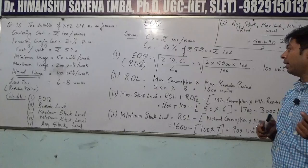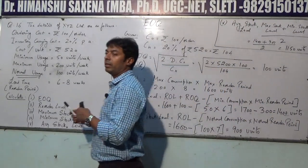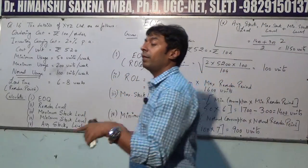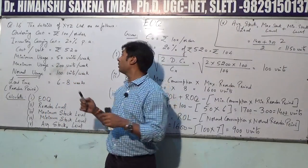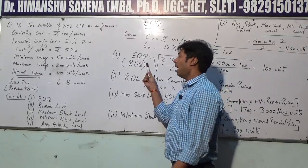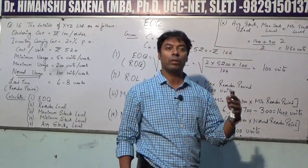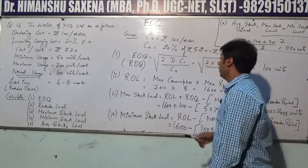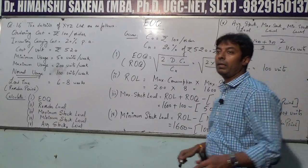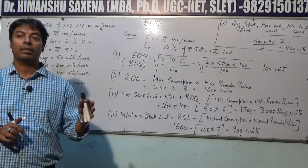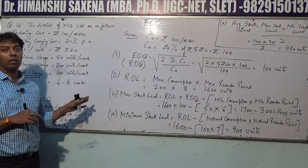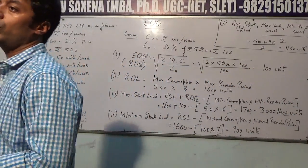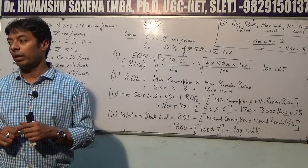These are the various stock levels discussed in inventory management. Although covered in the previous lecture, this illustration is important because here you first calculate EOQ, then use that value as your Reorder Quantity (ROQ), and further calculate stock levels: Reorder Level, Maximum Stock Level, Minimum Stock Level, and Average Stock Level.